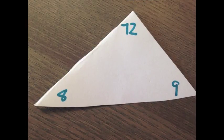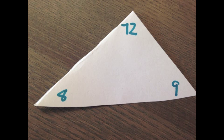For example, if you write 72 at the top of the triangle, you would write 8 in one corner and 9 in another. You could continue creating all the multiplication and division facts through the nines.